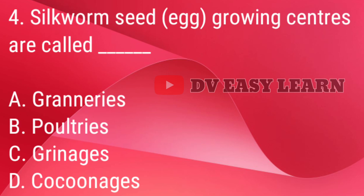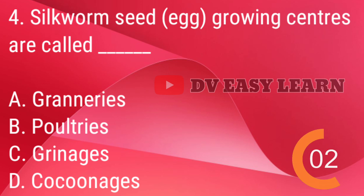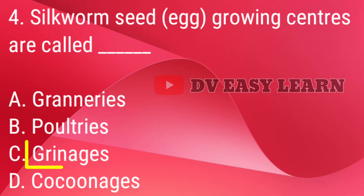Q4. Silkworm seed or egg growing centers are called — correct answer: Grainages.